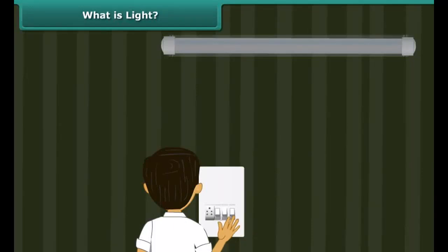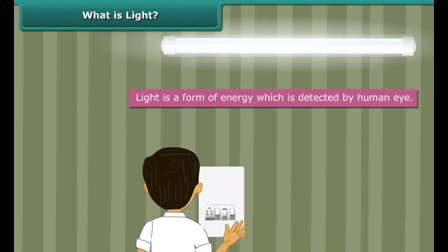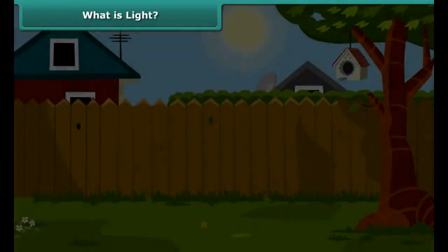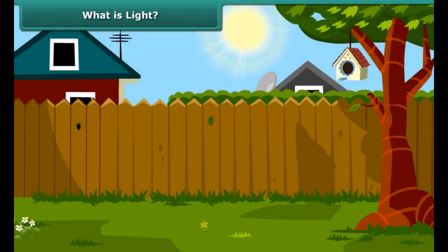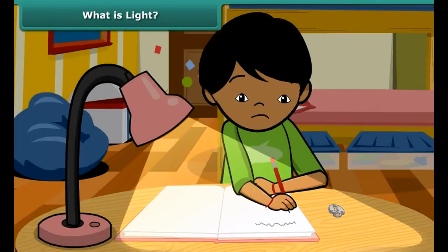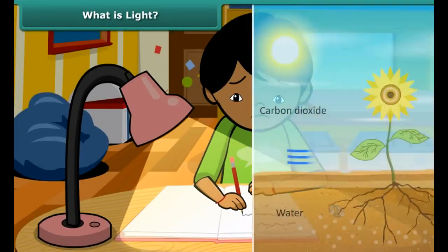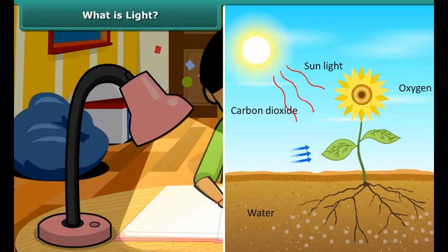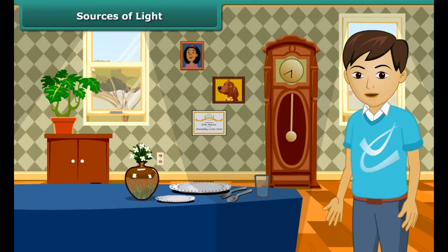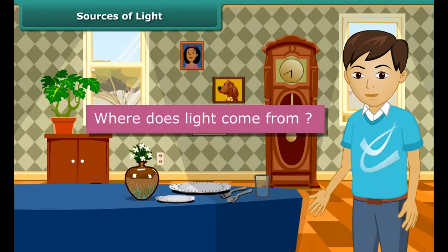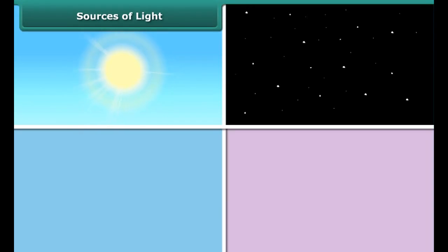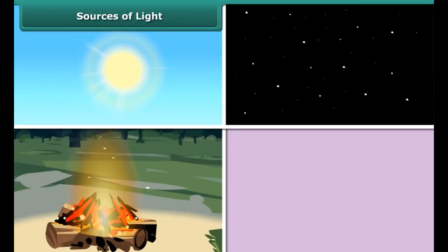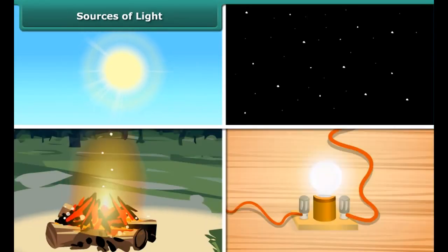What is light? Light is a form of energy which is detected by the human eye. It is everywhere around us. It not only helps us to see things, but it is also needed by plants to produce food for us. Light comes from many sources like the sun, stars, fire, candle, and an electric light bulb.